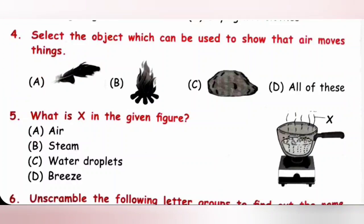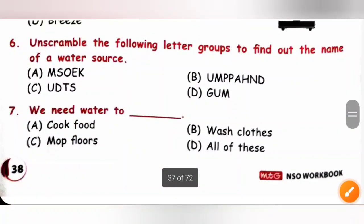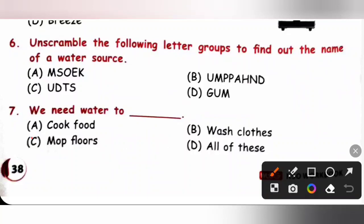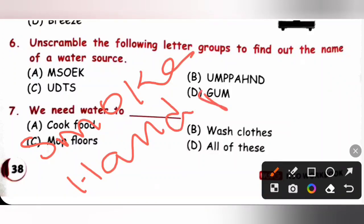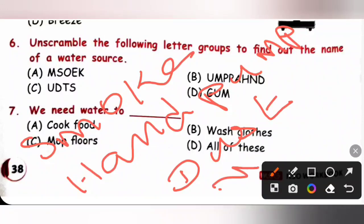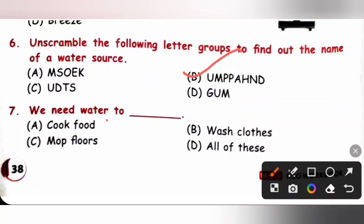Question 6: Unscramble the following letter groups to find the name of a water source. The unscrambled options are: A smoke, B hand pump, C dust, D mug. Out of these, hand pump is a water source. Option B is the correct answer.